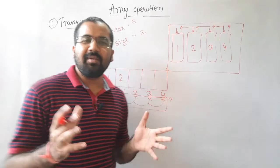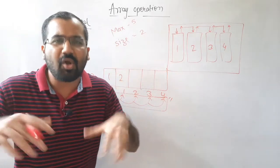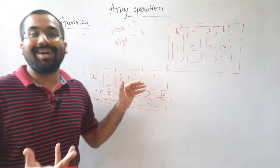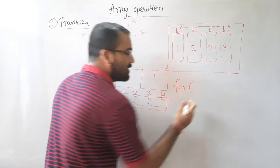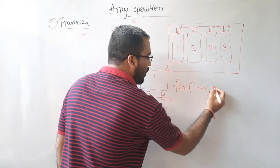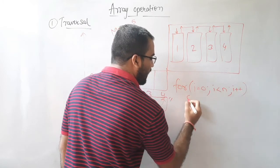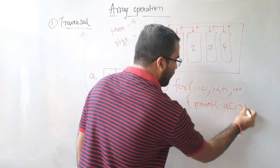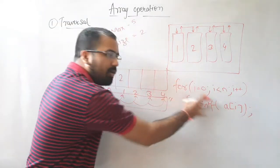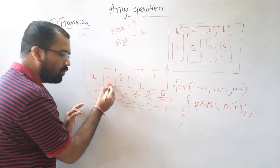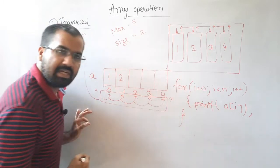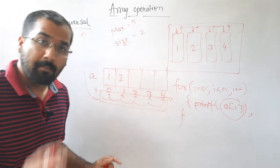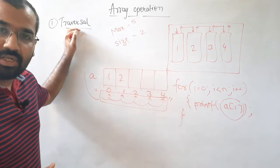An interesting fact: traversal is not new to you. You have definitely used this operation when printing the elements of an array. For example, using a for loop — i equals zero, i less than n, i plus plus — and inside, printf of a[i]. What we are doing is visiting each element starting at index zero and simply printing it.